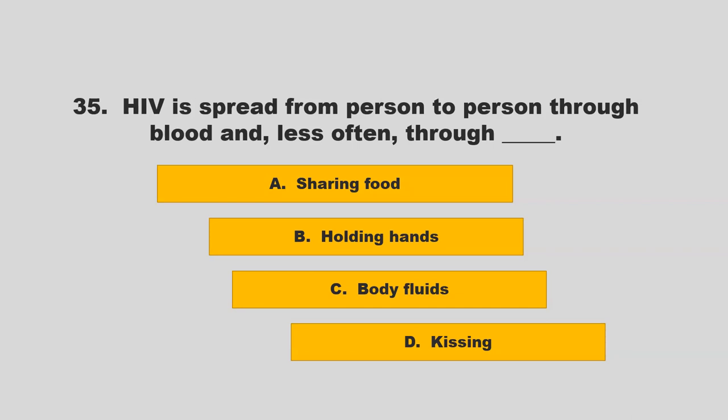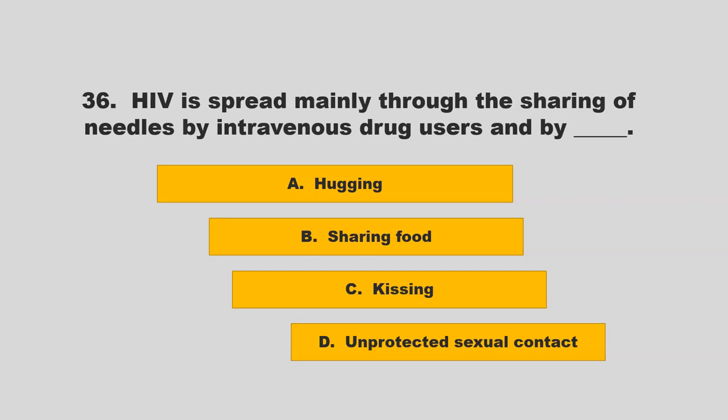HIV is spread from person to person through blood and less often through blank. Options: sharing food, holding hands, body fluids, or kissing. The correct answer is C: body fluids.